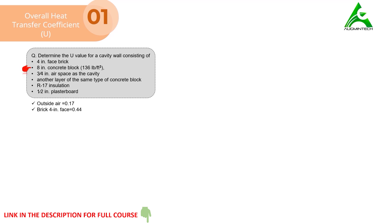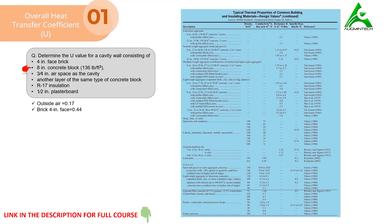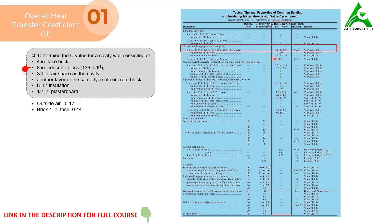Next we find the resistance of the 8-inch concrete block. We use the same chart, following the row for aggregate normal weight. Selecting the suitable row and column for resistance, the value can be taken anywhere between 1.11 and 0.97. So the concrete block 8-inch has the resistance of 1.11.